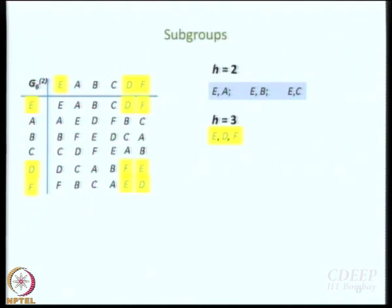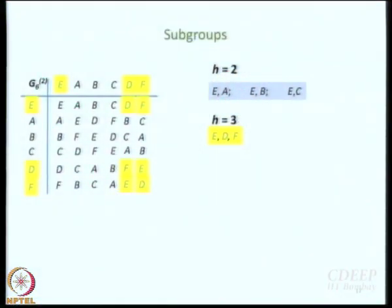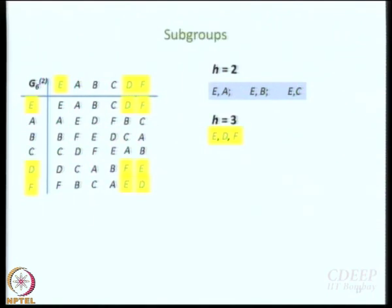Anything else? E,B,C,D — E,B,C,D would not work because you have to include F as well. Even if you try E,B,D you will find that F is required, since D*D = F. Can you construct a subgroup like E,A,C? Let us check: A*A is E, but A*C is D — that does not work. So we have exhausted all possibilities.